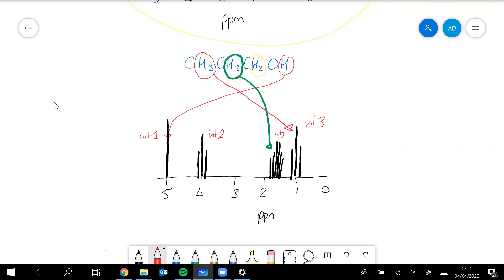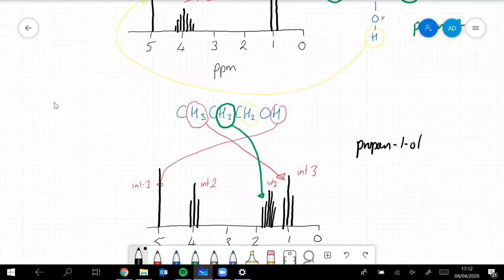So you can see propan-1-ol, very similar molecule to propan-2-ol, but it gives us quite a different NMR spectra. You just look at those two together.